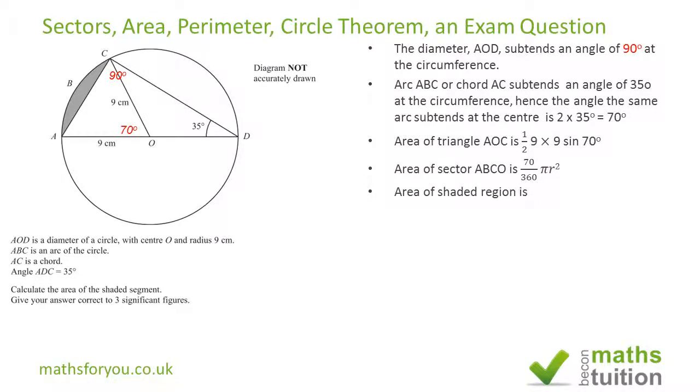We end up with the area of the shaded region being the difference between the area of the sector and the area of the triangle. If we isolate 9 squared in the brackets, when we do the arithmetic we end up with 81 × (0.61086 - 0.46984).